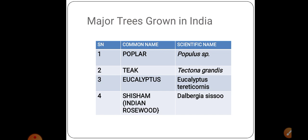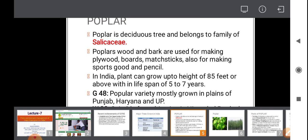For our lecture on major pests and diseases, I have selected four trees because learning all trees is not possible in such a small span of time. You can follow any standard book for detail. The four trees selected are poplar (Populus spp.), teak (Tectona grandis), eucalyptus (Eucalyptus tereticornis), and shisham or Indian rosewood (Dalbergia sissoo).